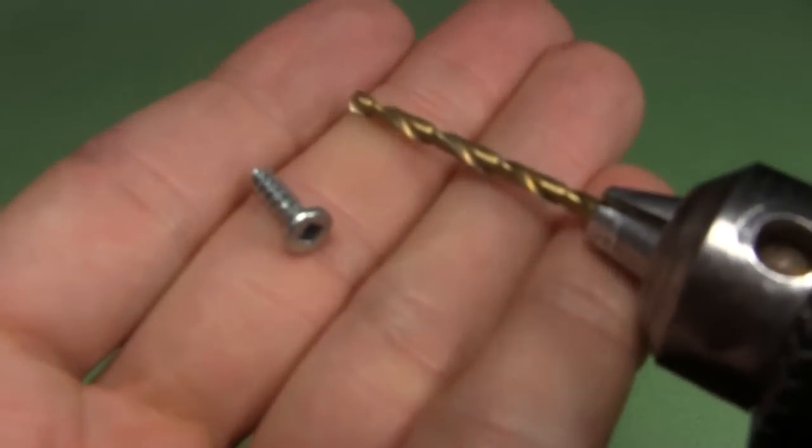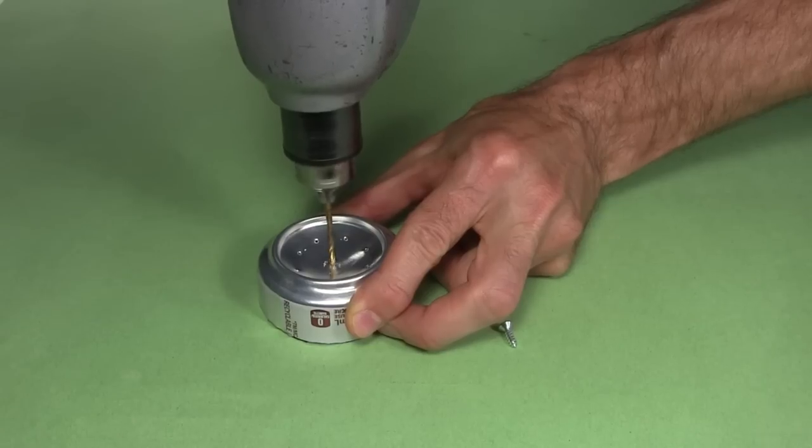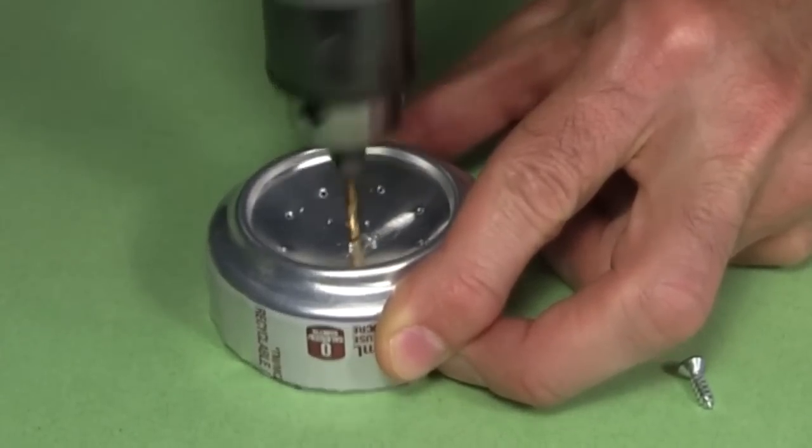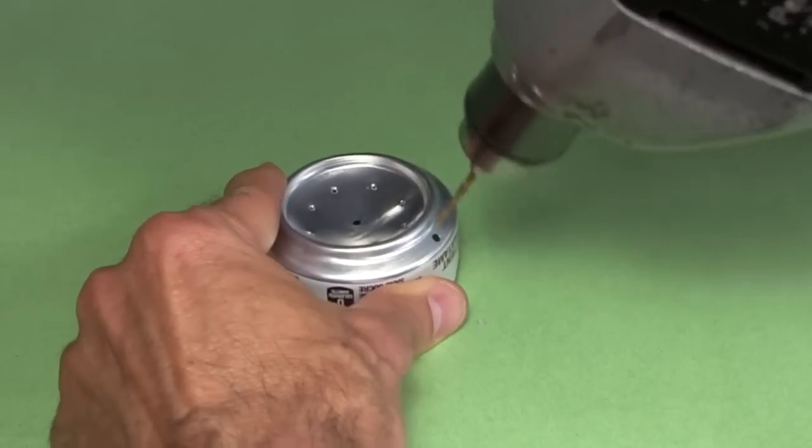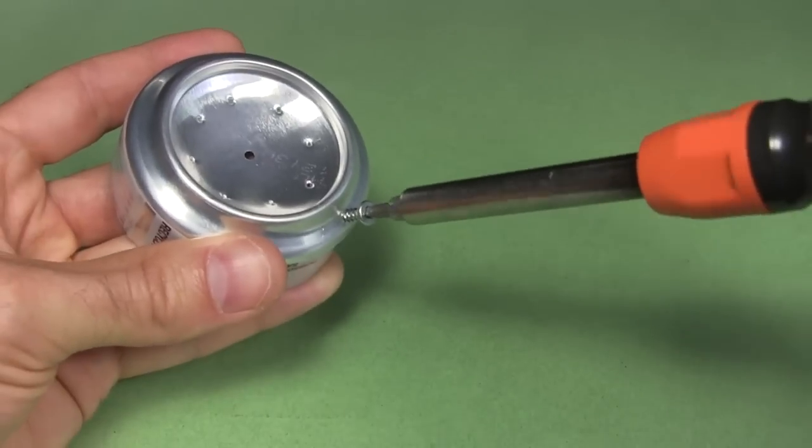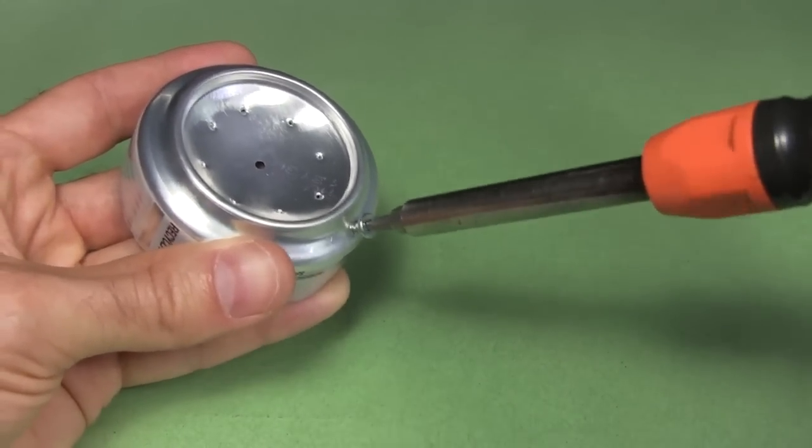Then I attach a drill bit to my drill that matches a small screw and drill a hole in the center. That one will be used for pouring in the alcohol. I also drill another hole near the edge and temporarily plug that one with a screw. That will also help with pouring in the alcohol.